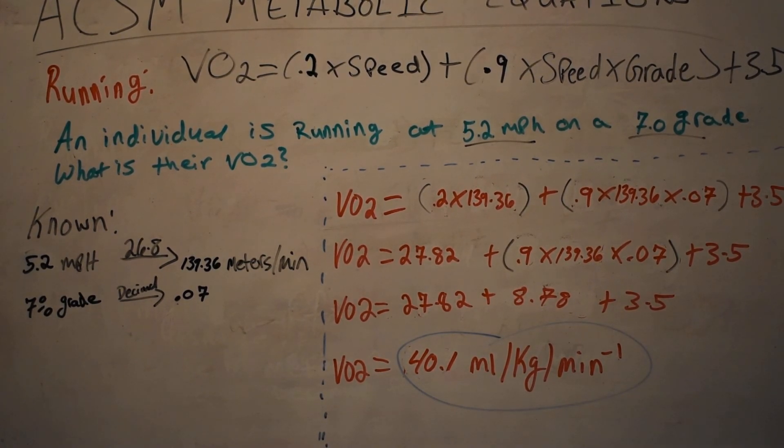Now they could also give you someone's VO2 and ask you to solve for speed or ask you to solve for a grade. Don't worry, I'm going to cover those in upcoming videos. Those get a little trickier. If they give you your speed and your incline and they just want you to do VO2, it's very, very easy. Just follow these steps and you'll get the answer no problem. Okay, bye guys.